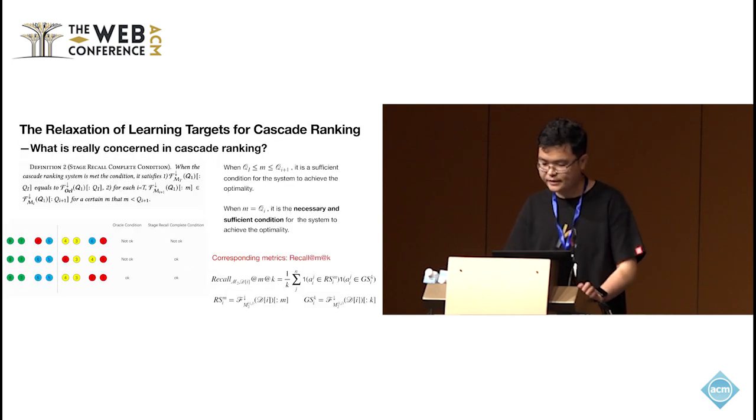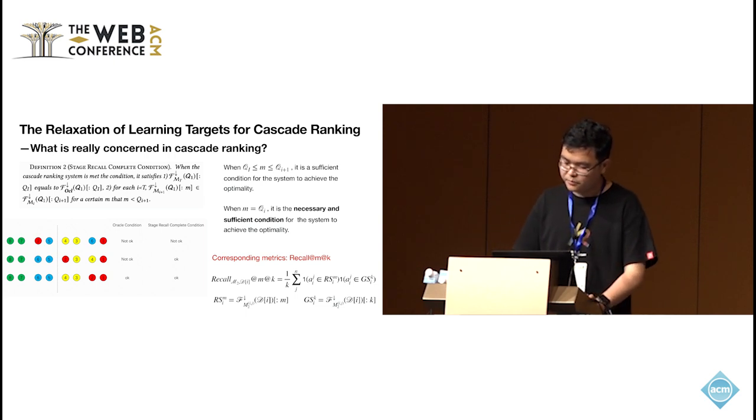When the entire order is fitted, we see the model meet the oracle condition, namely the sufficient condition we mentioned. As we said before, the oracle condition is too strict for the Cascade ranking models. Now we should consider what is really concerned in Cascade ranking. We define a stage recall complete conditions which includes a recall function family. When a specific M and K are given, it corresponds to a specific condition. For a top-K recommendation system, K is usually fixed. For each S stage, if the M equals to QI, the system can give the ground truth top-K items. This is sufficient and necessary condition. So, simply put, we could use recall at M at K as the requirement of the learning target, which is also intuitive.